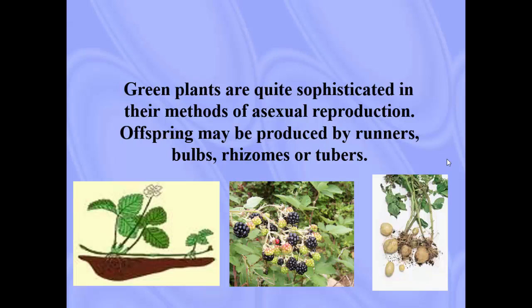Green plants are very sophisticated in their methods of asexual reproduction. Offspring may be produced by runners, bulbs, rhizomes, or tubers — those are the different types of stems that occur. So depending on what type of stem you have as a green plant, you could have a different type of asexual reproduction.